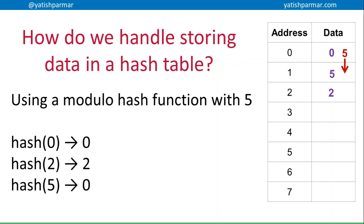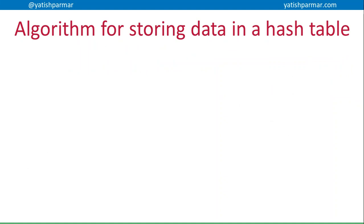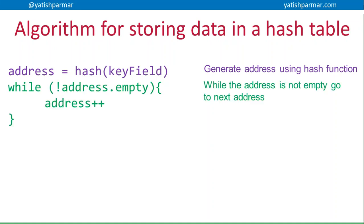So this is the algorithm that I was talking about in the previous video about storing data. Now we're going to extend it. The address is going to be equal to a hash of the key field. We generate the address using that hash function. While the address is not empty, we need to keep going to the next address, and then once we get to an empty place we insert the data at that address.